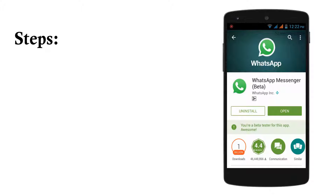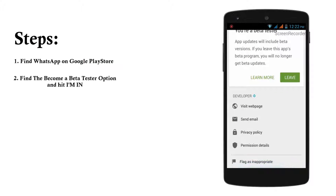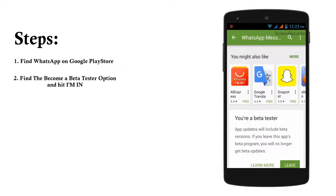The first thing you have to do is open up your WhatsApp Messenger on the Google Play Store. As you can see, I have already opened up my WhatsApp Messenger page on Google Play and it is saying that I am a beta tester for this app. If you go to this page, you will find an option to sign up for the beta. Just hit the 'I am in' option and you will be good to go. Whenever WhatsApp updates a new beta version, you are going to get the update pretty soon.